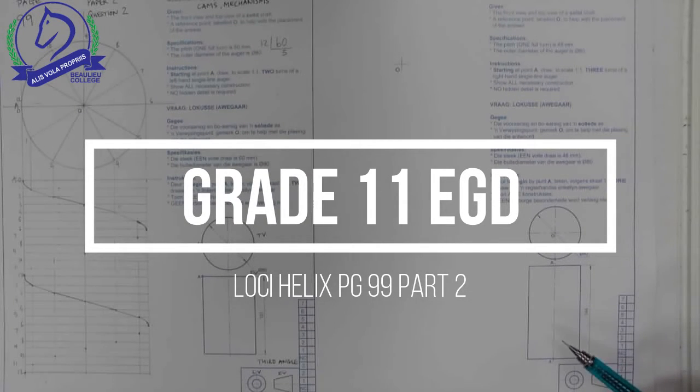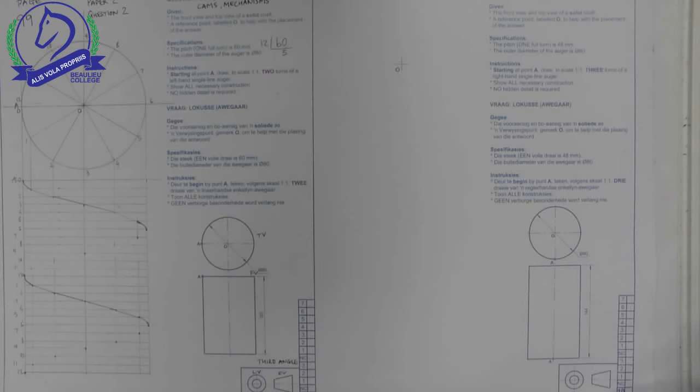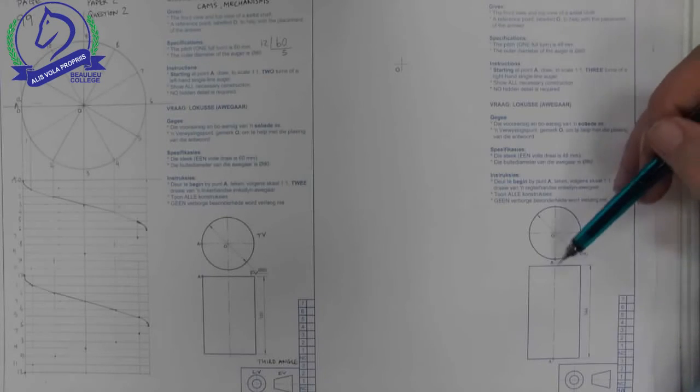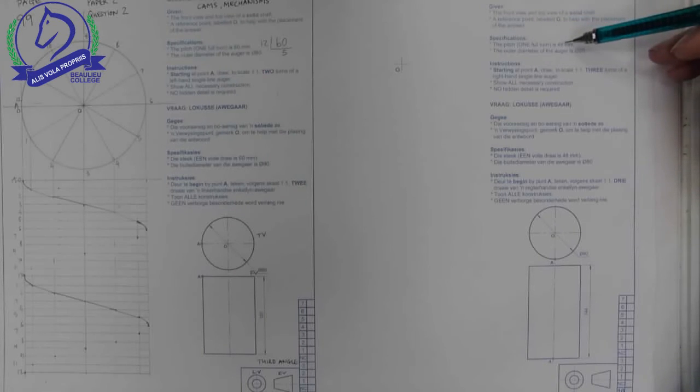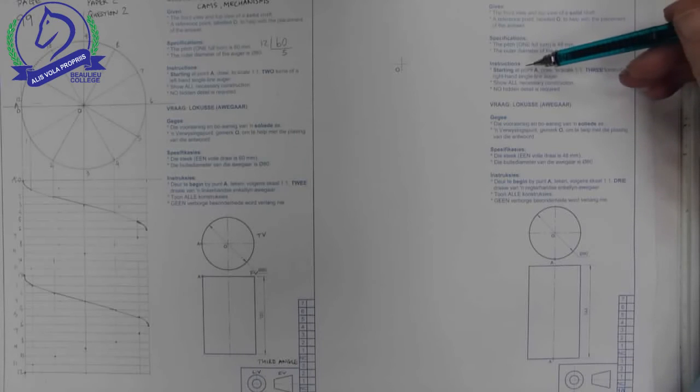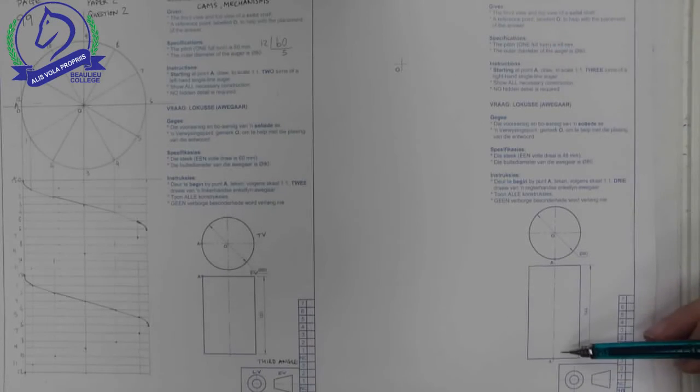On the other side of page 99, the information that they give us here is the given information. They want one full turn to be 48 millimeters, the outer diameter is 80. We need to draw starting at point A, draw to a scale of one to one, three turns of a right-handed single line auger.